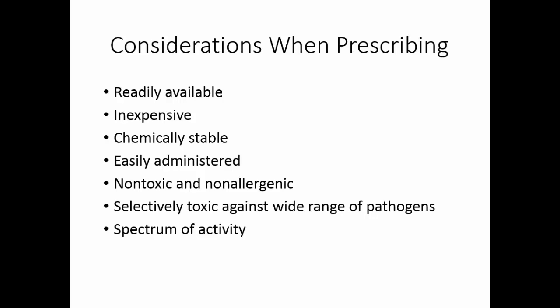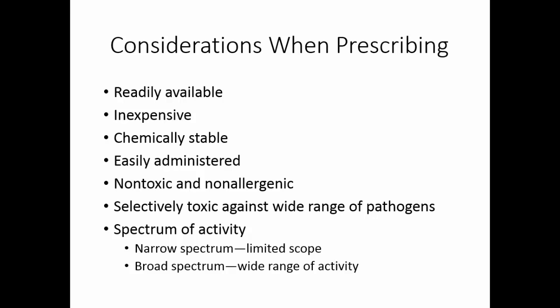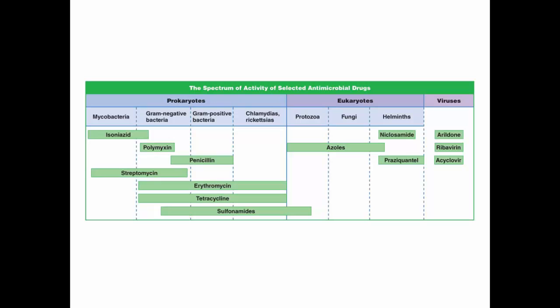And is it selectively toxic against a wide range of pathogens? We talk about a drug's spectrum of activity. Something with a narrow spectrum will target only a limited number of microorganisms, while something that's broad spectrum targets a wide range. Here you see some examples of very narrow spectrum drugs and some much broader spectrum drugs and what they're used for.